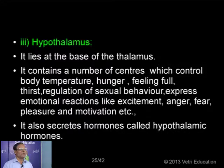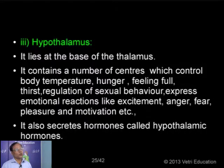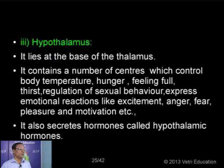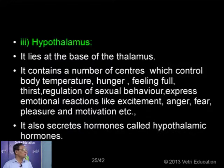The hypothalamus controls certain activities: for example, your thirst, your hunger, feeling full, the regulation of sexual behavior, various expressions — excitement, fear, anger, pleasure, and other activities like motivations. In addition to this nervous activity, the hypothalamus also secretes certain chemicals called hypothalamic hormones. These hormones are responsible for regulating the various activities of another endocrine gland — the master gland, the pituitary gland, which is located in the brain. So through its secretions, hypothalamus also controls the activities of the pituitary gland.